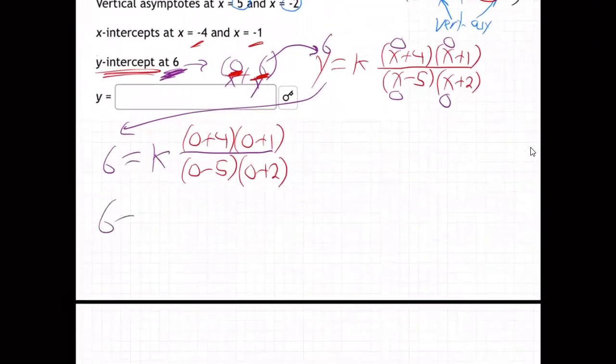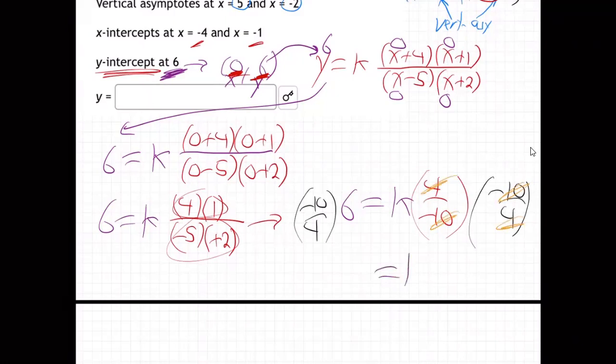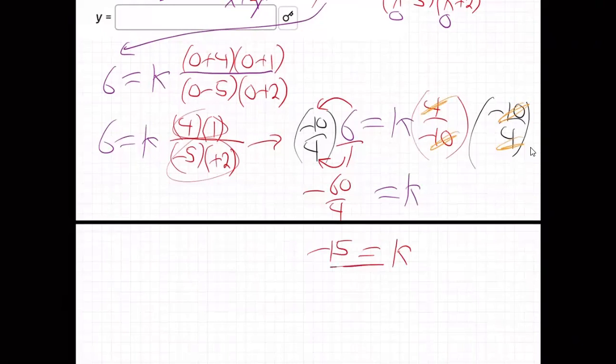6 equals k times 0 plus 4, 0 plus 1, 0 minus 5, 0 plus 2. Does that make sense? I plugged in 0 for x everywhere and 6 for y because that is the y-intercept. That's the y-intercept of this equation. Meaning that point is where the graph goes through the y-axis. That's a point on the graph. It's got to make the equation true. So I can plug in 0 for x and 6 for y and now I can solve. So what happens? 6 equals k times, this is going to be 4 times 1 over minus 5 times plus 2. 6 equals k times 4 over negative 10, right? 1 times 4 negative 5 times 2. Now how do you solve that for k? You multiply top and bottom by the reciprocal, minus 10 over 4, minus 10 over 4. I multiplied both sides. You can always, with an equal sign, you can always do the same thing to both sides of the equation. And so these guys totally cancel out. K is alone. What happens on the other side? You just multiply. Top times top, bottom times bottom. That 6 is over 1. You get negative 60 over 4. That is negative 15. K is negative 15.